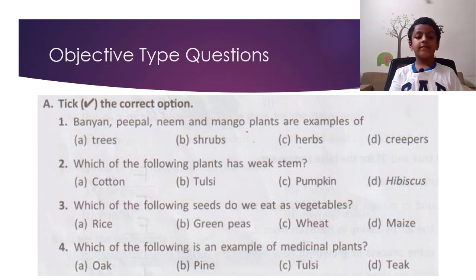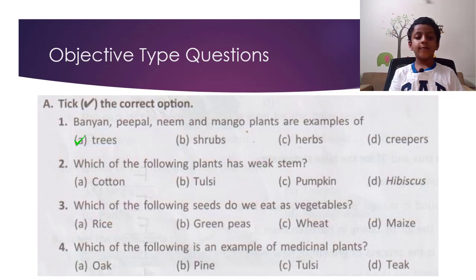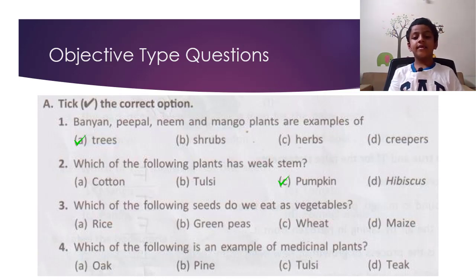Question 1: Banyan, Peepal, Neem and Mango plants are examples of trees. Which of the following plants has a weak stem? The answer is pumpkin. Which of the following seeds do we eat as vegetables? The answer is green peas.